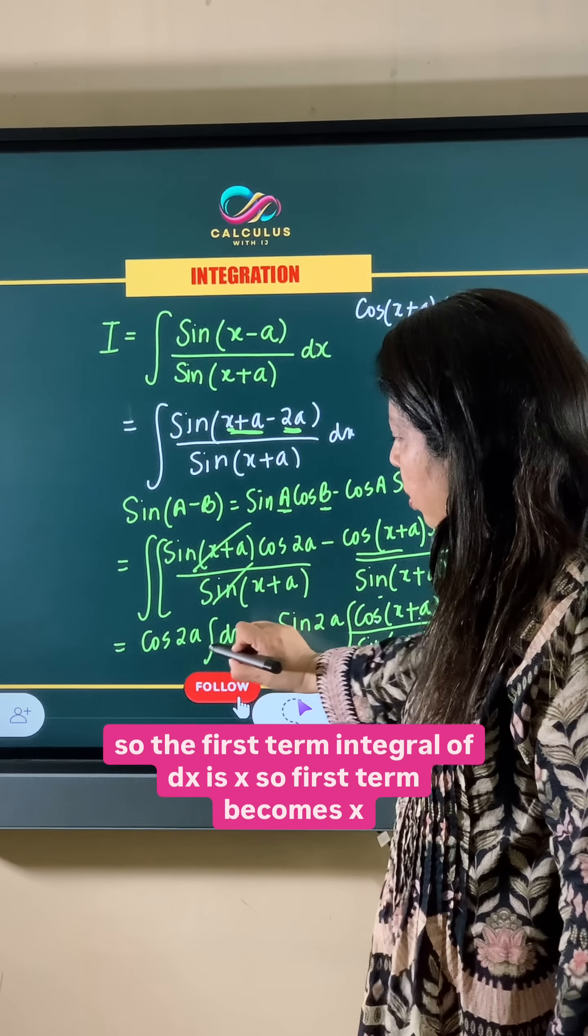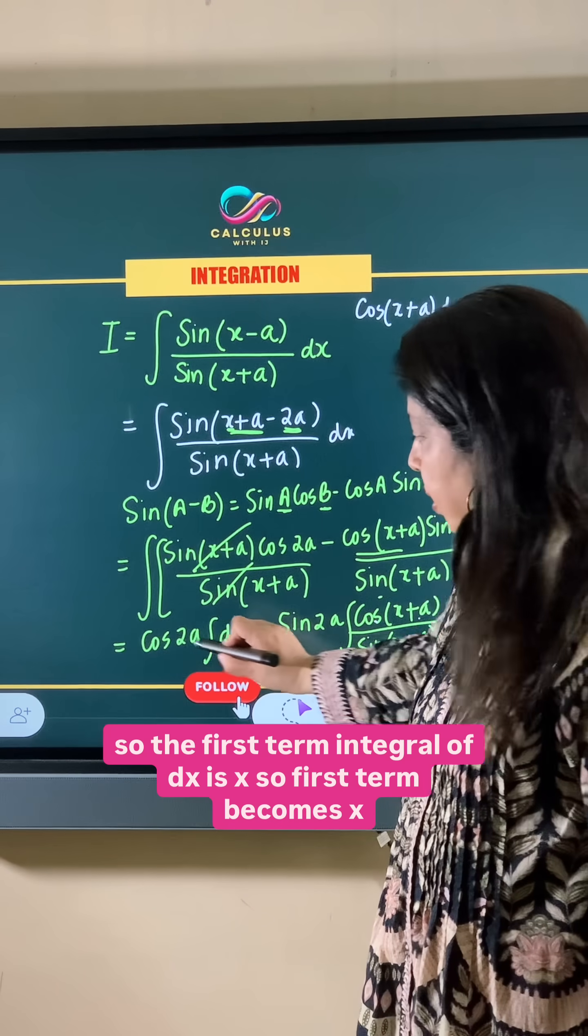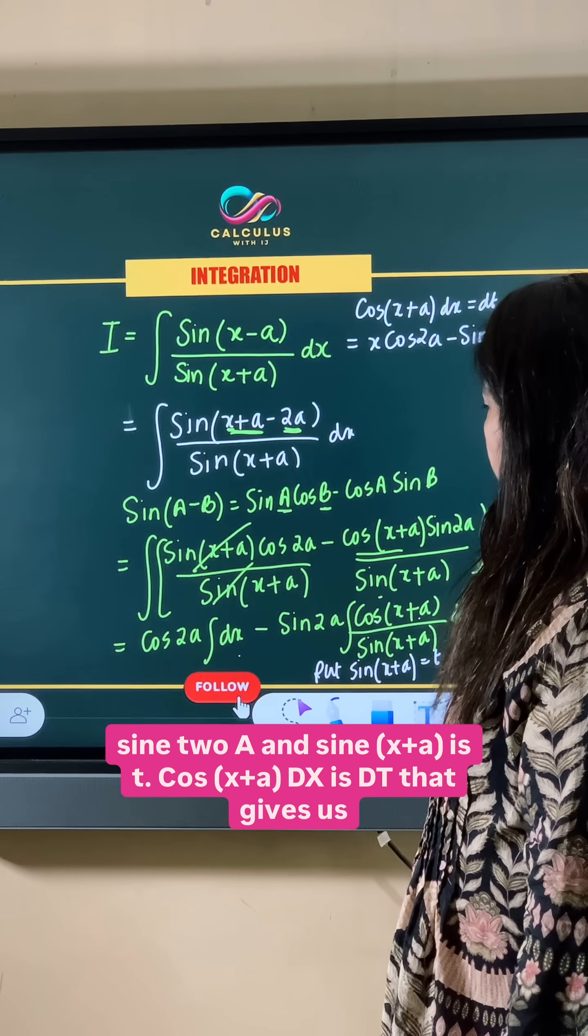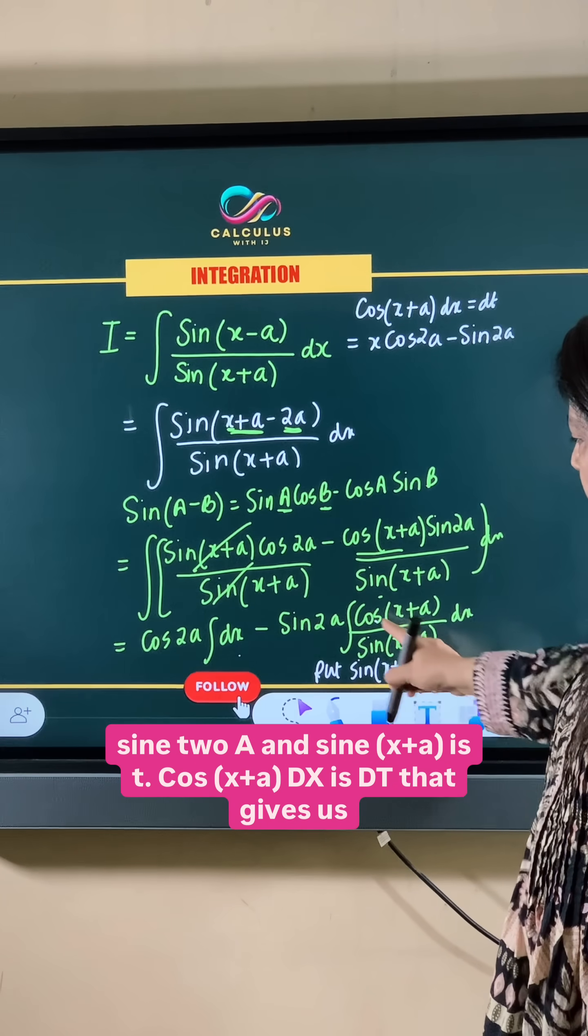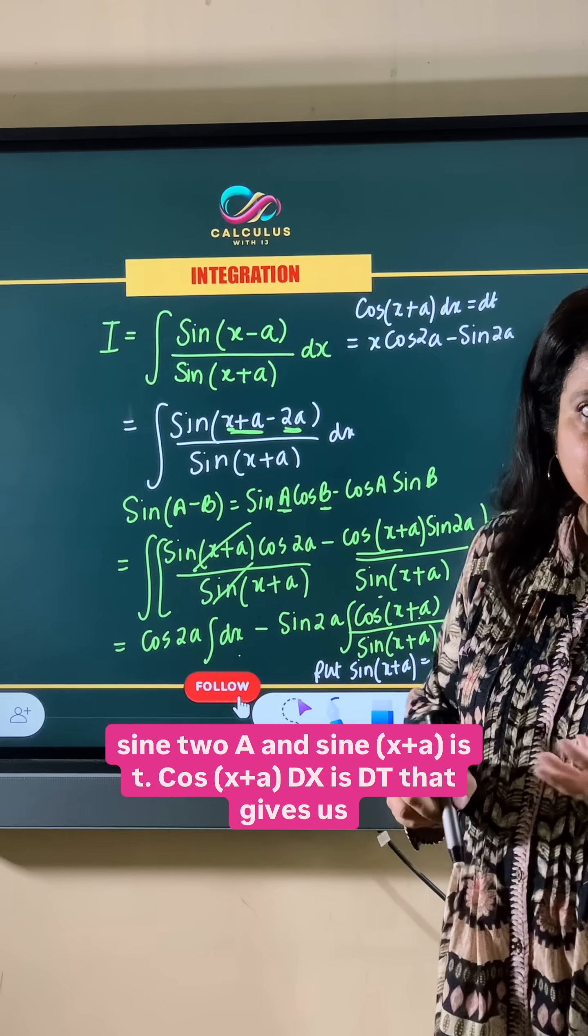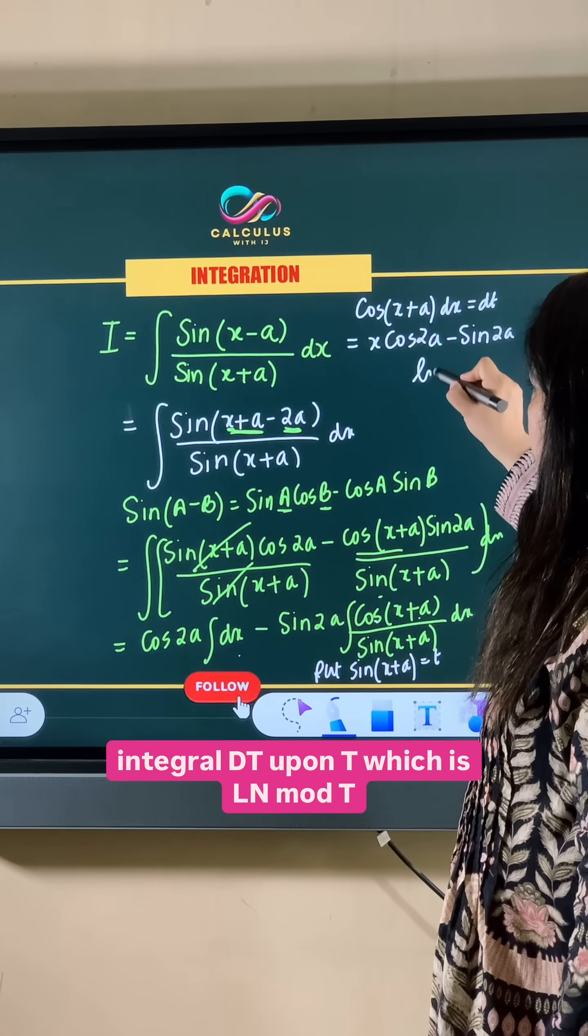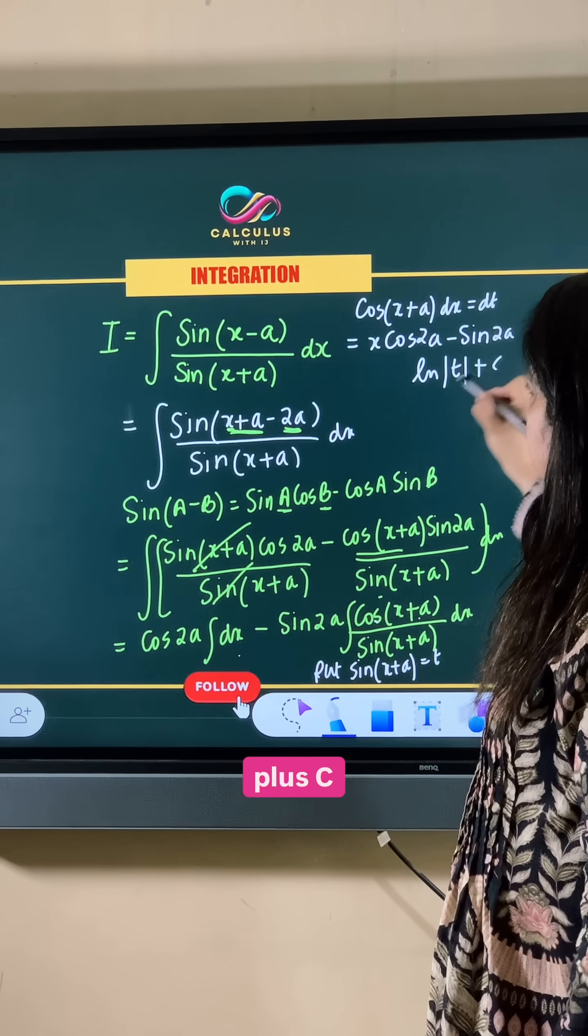So the first term, integral of dx is x. First term becomes x cos 2a minus sin 2a, and sine x plus a is t, cos x plus a dx is dt, that gives us integral dt upon t which is ln mod t plus c.